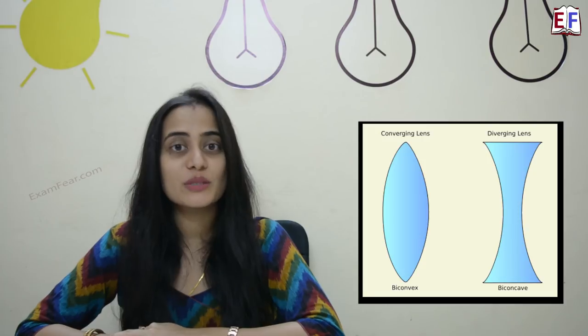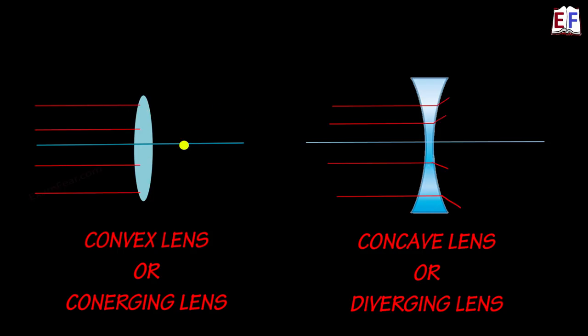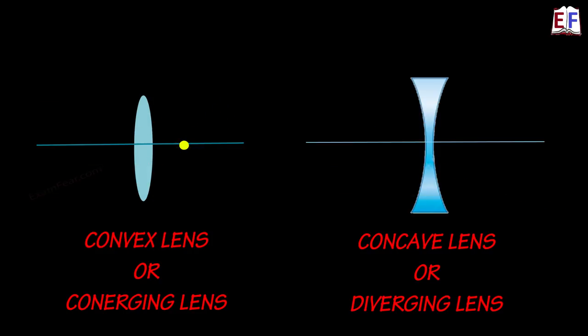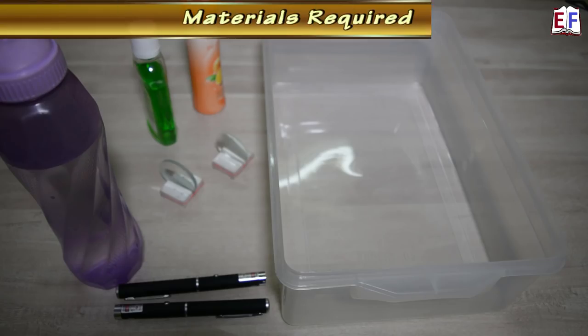The word 'lens' reminds us of the lens in a camera, in spectacles, or even in the peephole of our main door. Hello friends, today we will play around with concave and convex lenses. We have been learning that a concave lens is a diverging lens and a convex lens is a converging lens, and today we will carry out this experiment to see if that's the reality.